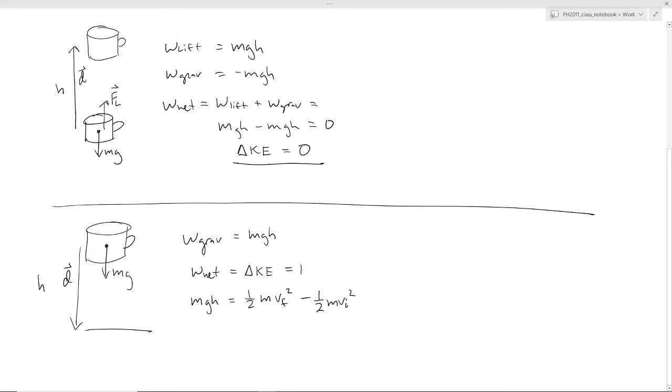If you're dropping the object, it doesn't have any initial kinetic energy. So this would be zero because the initial velocity would be zero.